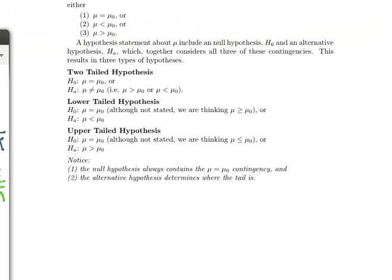There are three kinds of hypothesis tests about the mean of a population: a two-tailed test, a lower-tailed test, and an upper-tailed test. In this video, let's look at a lower-tailed test.